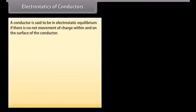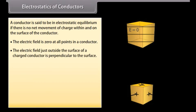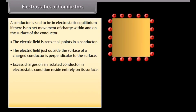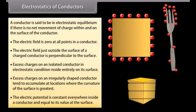Electrostatics of conductors: A conductor is said to be in electrostatic equilibrium if there is no net movement of charge within and on the surface of the conductor. The electric field is zero at all points inside a conductor. The electric field just outside the surface of a charged conductor is perpendicular to the surface. Excess charges on an isolated conductor reside entirely on its surface. Excess charges on an irregularly shaped conductor tend to accumulate where the curvature of the surface is greatest. The electric potential is constant everywhere inside a conductor and equal to its value at the surface.